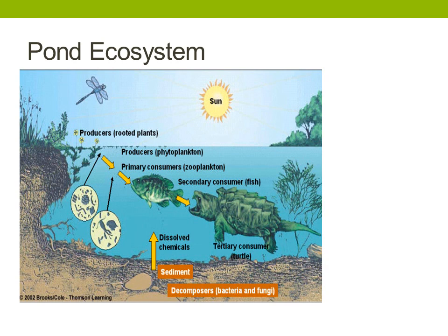Here we have an example of a pond ecosystem. When we look at this picture we can see a food chain and also some of the abiotic factors which are contributing to this overall system. When we talk about the abiotic factors we'll be looking at the Sun, and the minerals for example that might be dissolving in the water. We can see plants growing — the producers which are the algae and so on that might be living in the water.